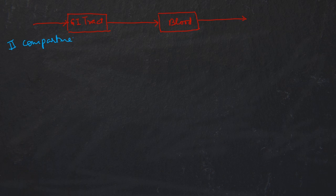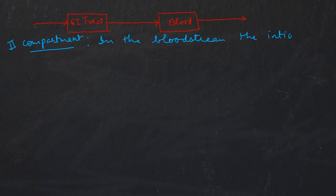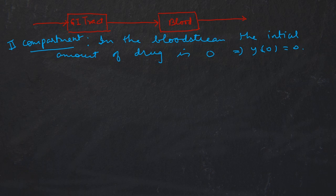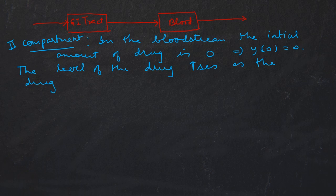In the second compartment, the bloodstream, the initial amount of drug is zero, which means y(0) = 0 — there was no drug in the bloodstream initially. The level of drug increases as the drug slowly and gradually diffuses from the GI tract into the bloodstream.